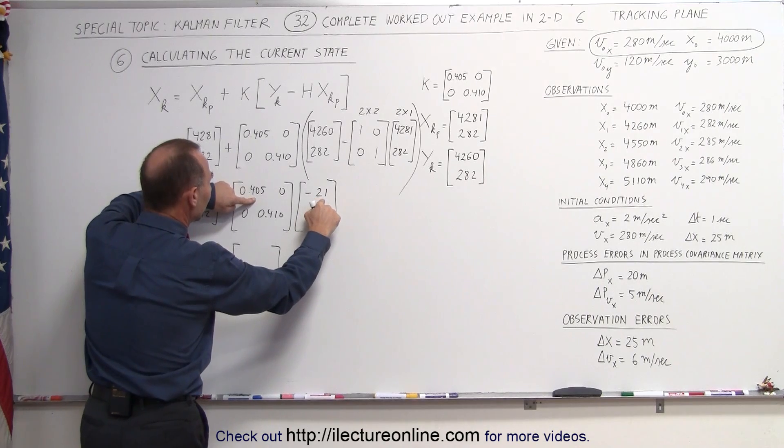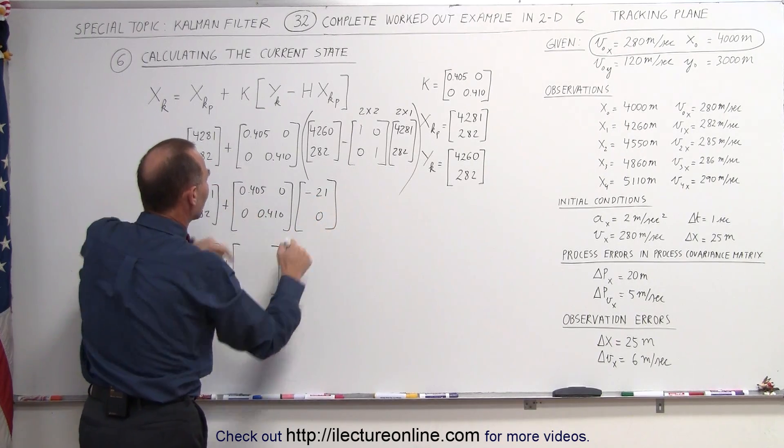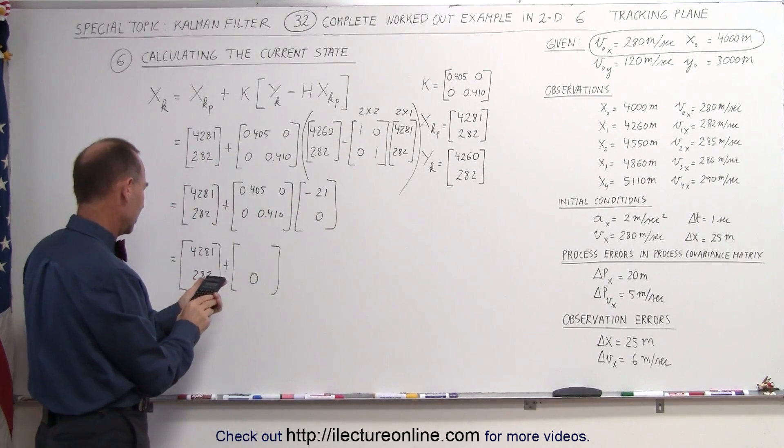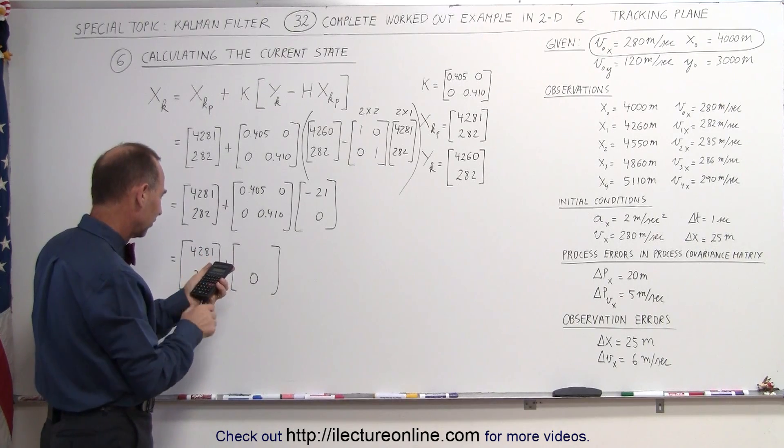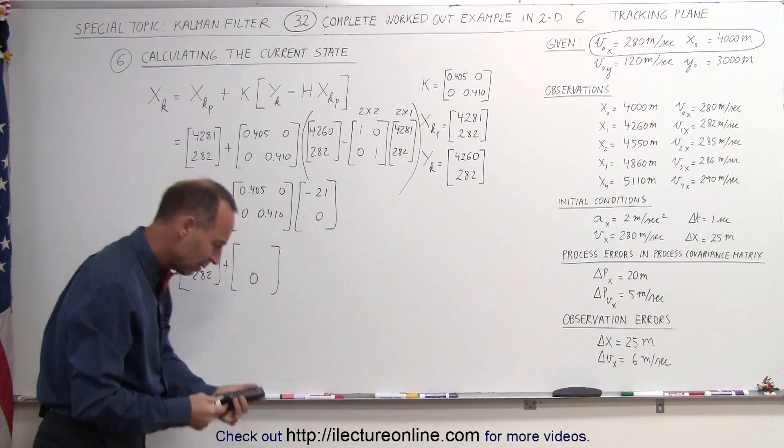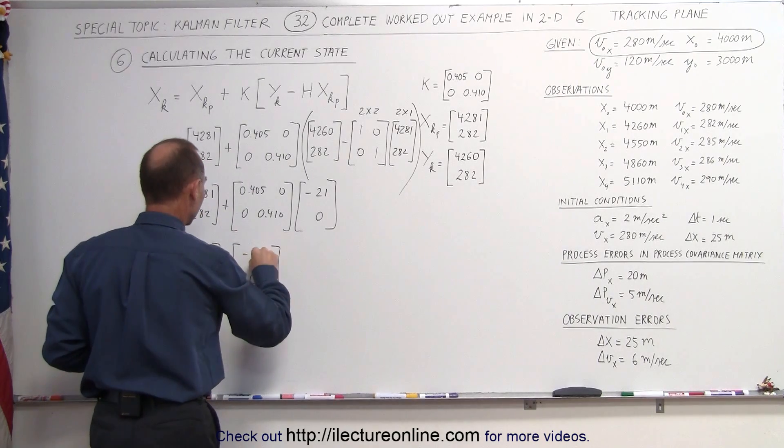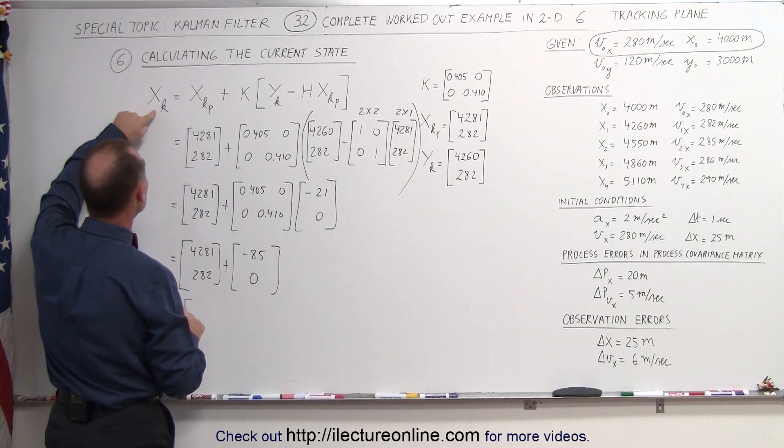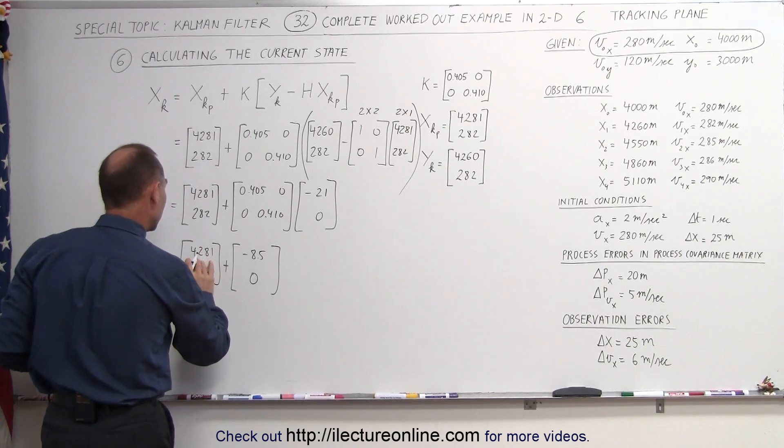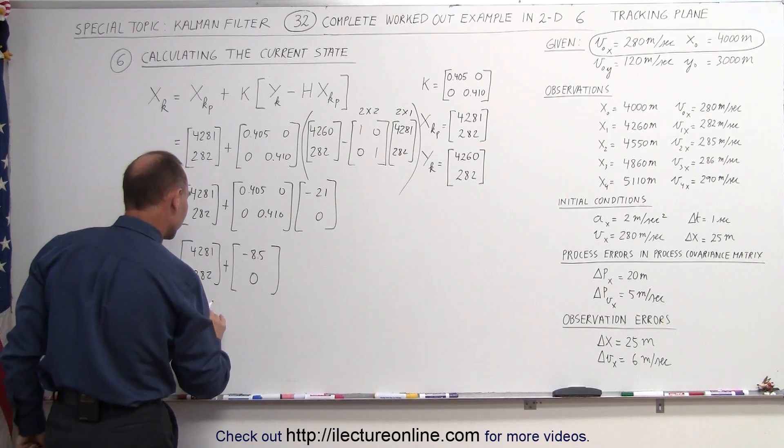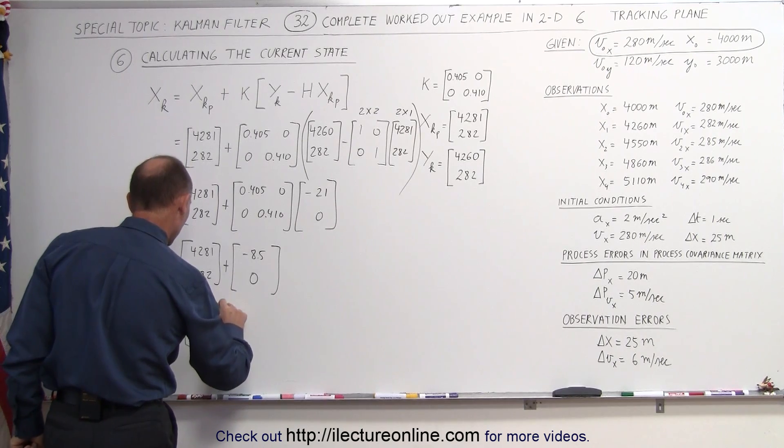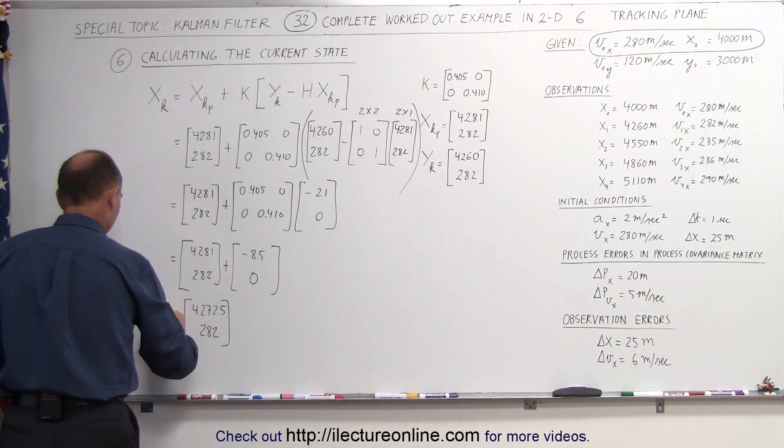When you multiply this times this, you get this number times this number, plus 0, and then you get 0 over here. But the 0.405 times 21, that's a negative, which is a negative 8.5. So when we adjust that, we get the new current state, 4,281 minus 8.5, that's 4,272.5 and 282. x sub k.